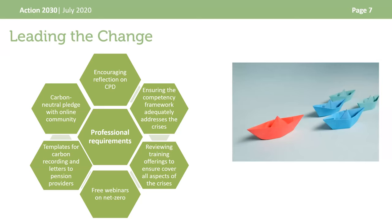The group presented recommendations to our governance committees on bringing about change to address the climate emergency and biodiversity crisis. Our committees agreed to review the competency framework in 2021–22 to ensure it adequately addresses the crises. They will review our training offering, alter CPD recording forms and training proposal forms to encourage reflection on the joint crises. We'll also offer free webinars, templates for reporting carbon and template letters for providers, and intend to run a carbon neutral pledge campaign — though this is not compulsory.